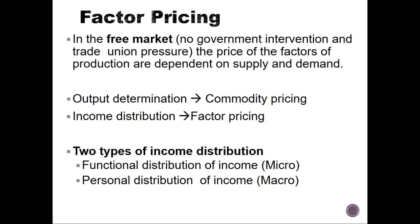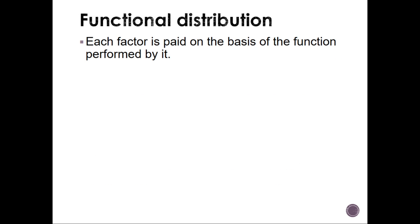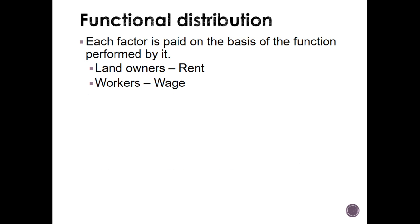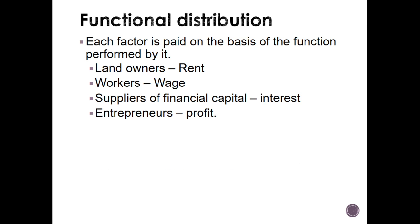There are two types of income distribution: functional distribution of income, which is a micro concept, and personal distribution of income. Functional distribution states that each factor is paid on the basis of the function performed by it — so land owners get rent, workers get wages, suppliers of financial capital get interest, and entrepreneurs get profit.